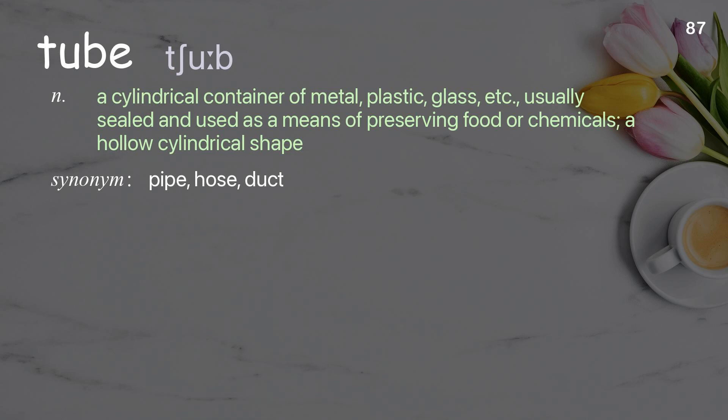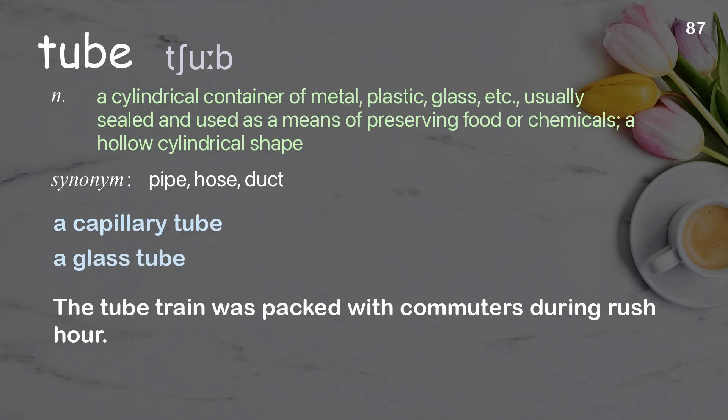Tube: A cylindrical container of metal, plastic, glass, etc., usually sealed and used as a means of preserving food or chemicals. Also, a hollow cylindrical shape. Examples: A capillary tube, A glass tube. The tube train was packed with commuters during rush hour.